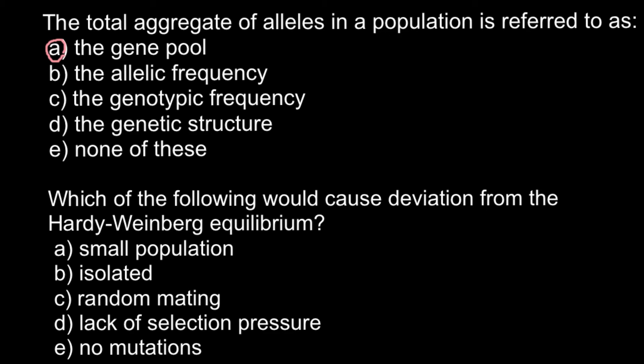So we're left with only two answers. We can cross out all the rest because they would be requirements for the population to stay in Hardy-Weinberg equilibrium. So answer B, isolated population, and answer A, small population. Sometimes it's hard to choose because isolated population usually means that this is a small population, and in small populations there can be genetic drift. But actually, isolated population doesn't always mean a small population.